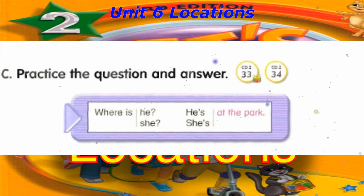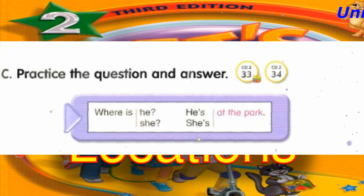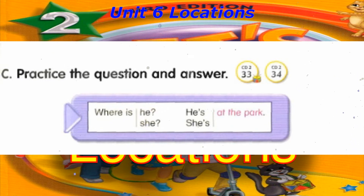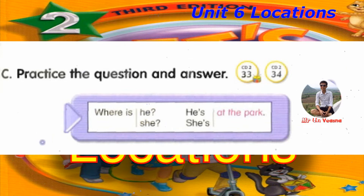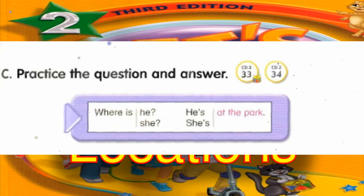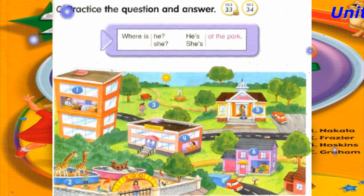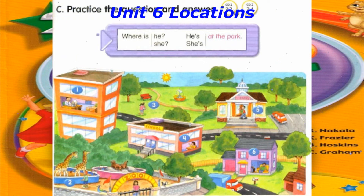Track 32. C. Practice the question and answer. Where is he? He's at the park. Track 34, C. Practice the question and answer. Number 1: Where is he? He's at work.